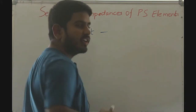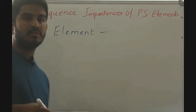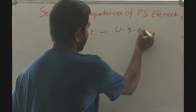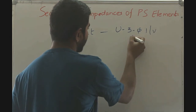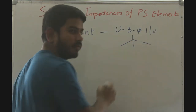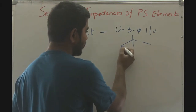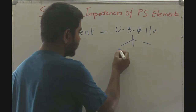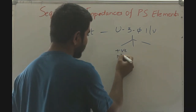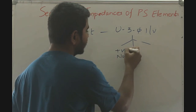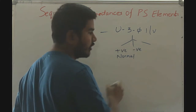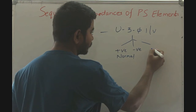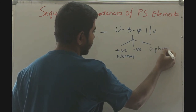In unsymmetrical fault conditions, according to Fortescue's theorem, an unbalanced three-phase current or voltage can be resolved into three separate sets of balanced vectors. One set consists of a balanced three-phase system with positive phase sequence, another set has a negative phase sequence component, and the third set is a co-phasal quantity with zero phase sequence component.